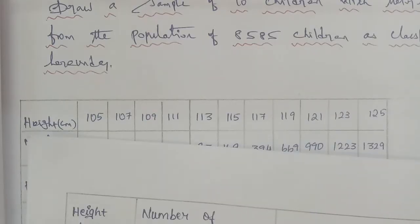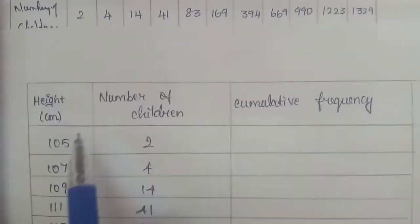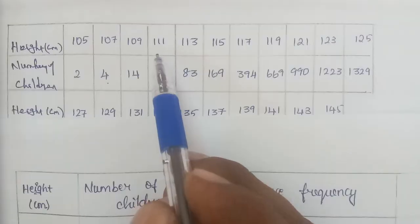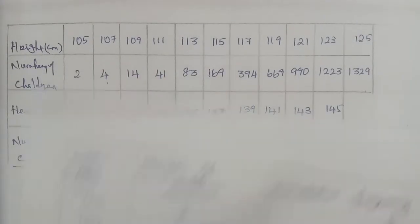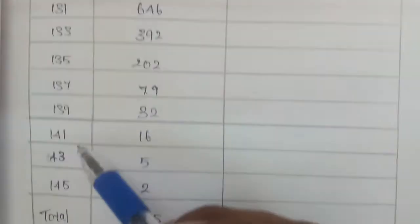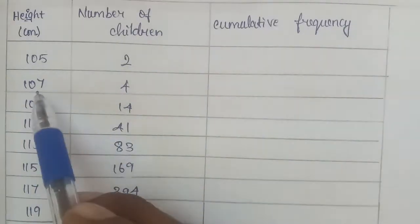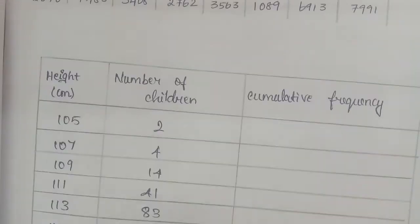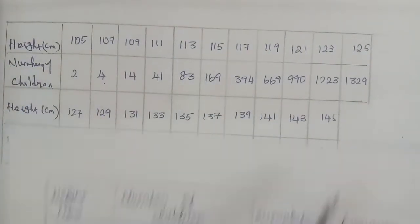Given question: the heights are 105, 107, 109, 113, up to 145cm. That's 10 height categories. The number of children for each: 105cm has 2 children, 107cm has 4 children. All of these are from the given question. So the number of children column is entered.